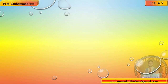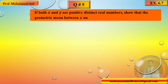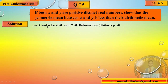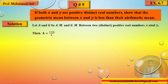Question 5: X اور Y positive distinct real numbers ہیں۔ Show کرنا ہے کہ ان کا geometric mean less than ہوگا ان کے arithmetic mean سے۔ Let A = arithmetic mean = (X+Y)/2 اور G = geometric mean = √(XY)۔ ہم نے show کرنا ہے کہ G < A۔